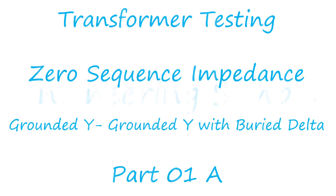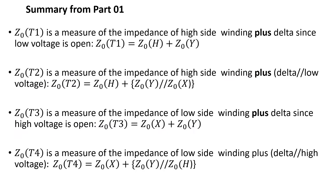Hello and welcome to Engineer Simple. In this part, Part 1a, I'm going to do the derivation I left out from Part 1 of transformer test and zero sequence impedance for grounded-Y grounded-Y with the buried Delta. This derivation actually applies to any grounded-Y grounded-Y with or without a buried Delta. This is a summary from Part 1, so I recommend watching Part 1.